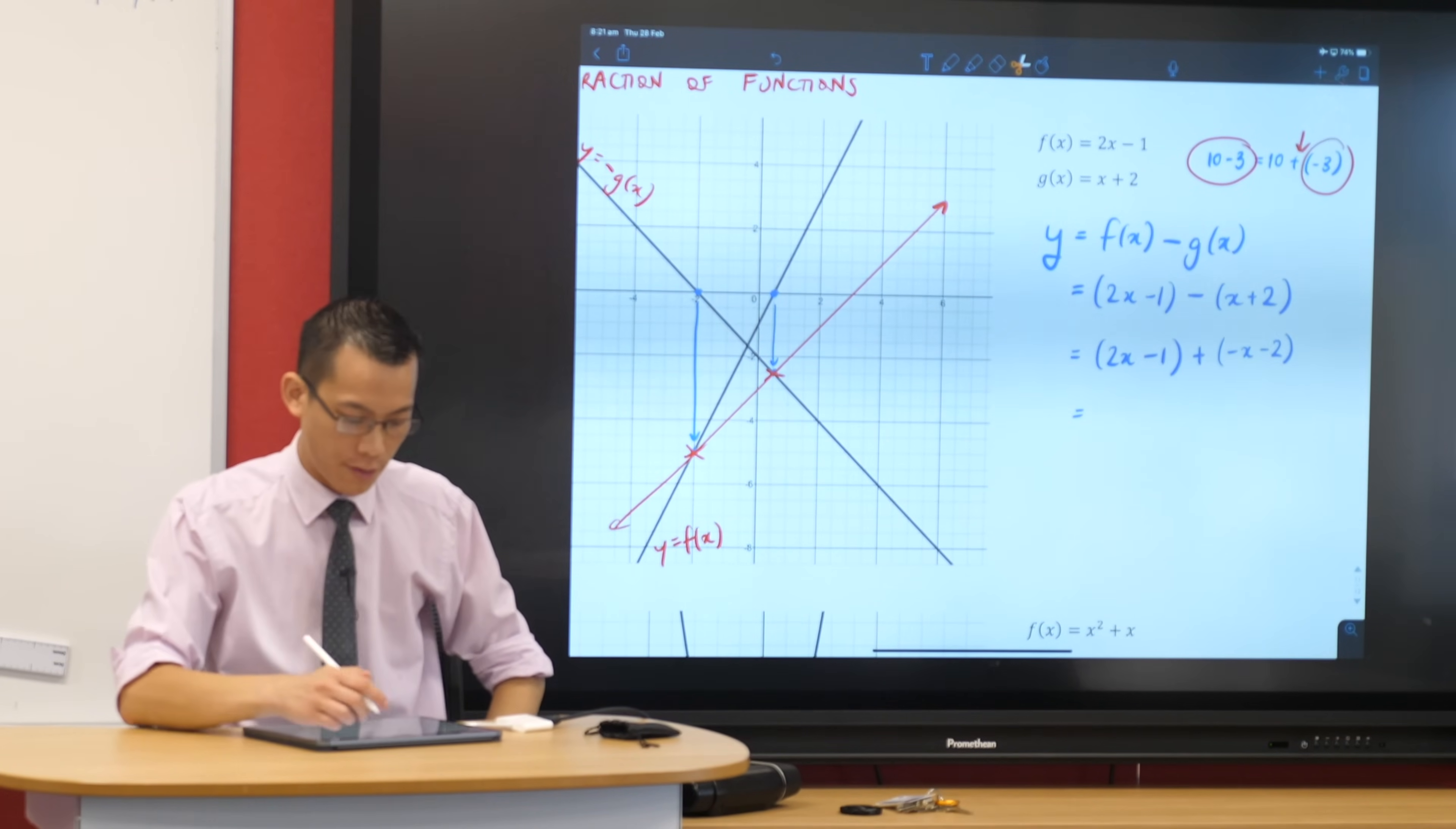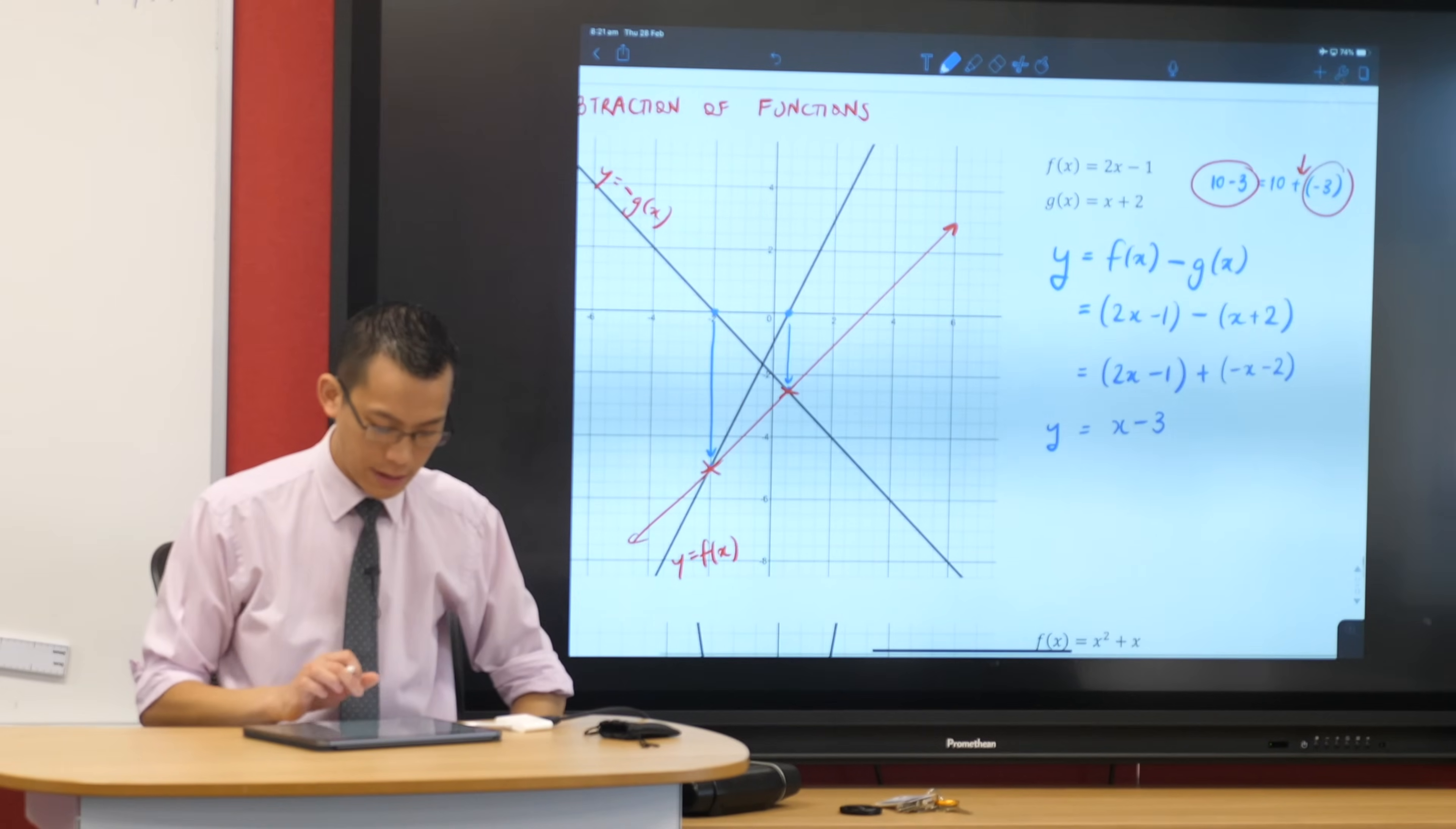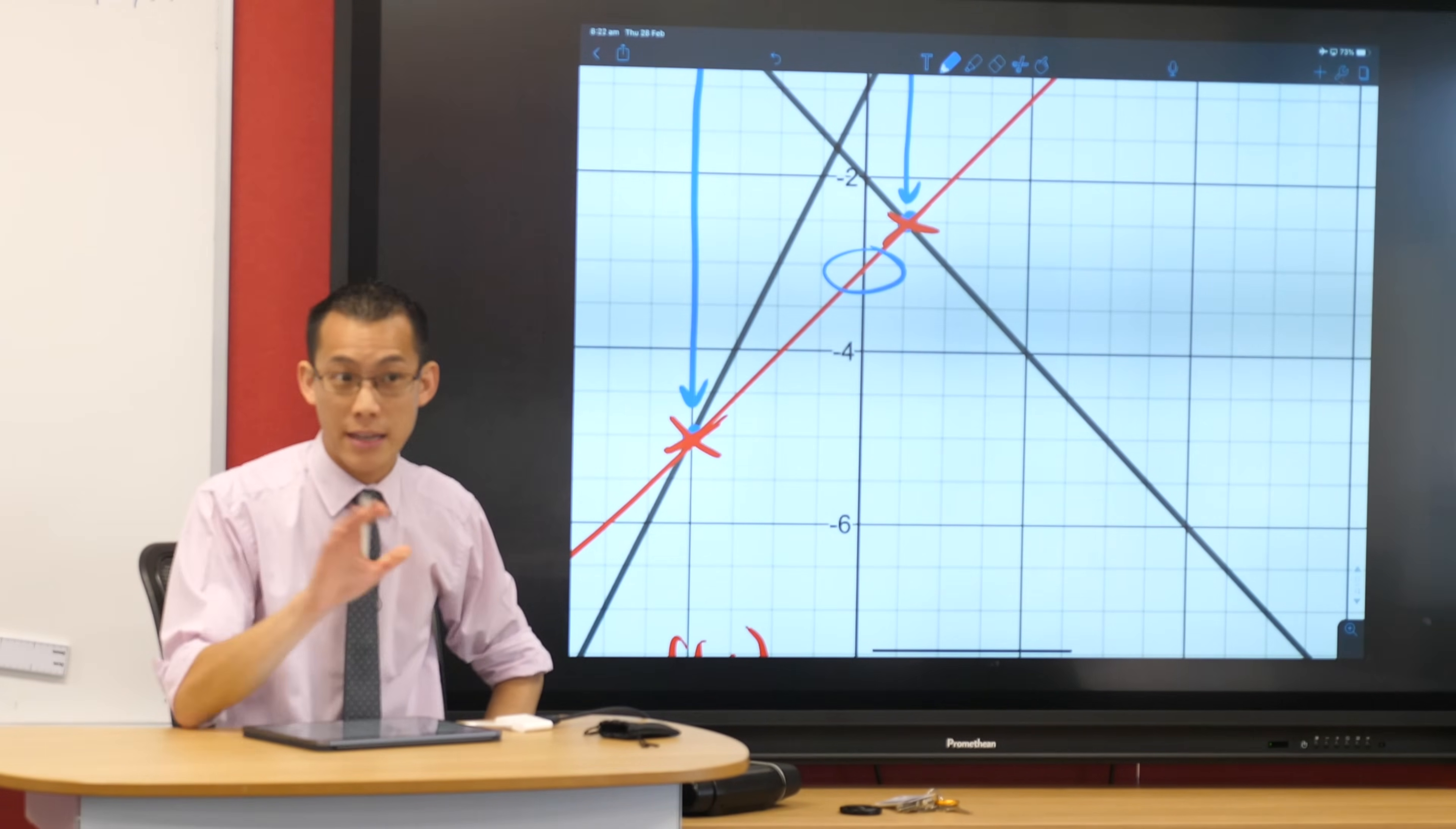So let's do the algebra now just to confirm. What I'm getting is, what is 2x plus negative x? How many x's will I be left with? Just a single x. Then I've got minus one and a minus two. Let's check. Does this look like my graph? Gradient is one? Gradient is one, like so. And y-intercept is minus three. You can see it right there. You okay with that? Does it make sense?